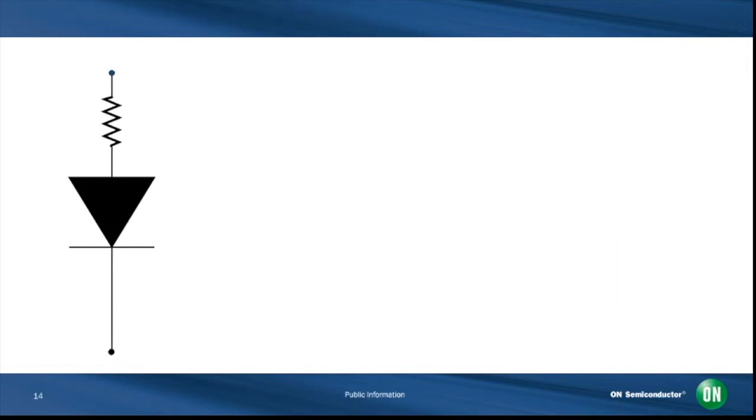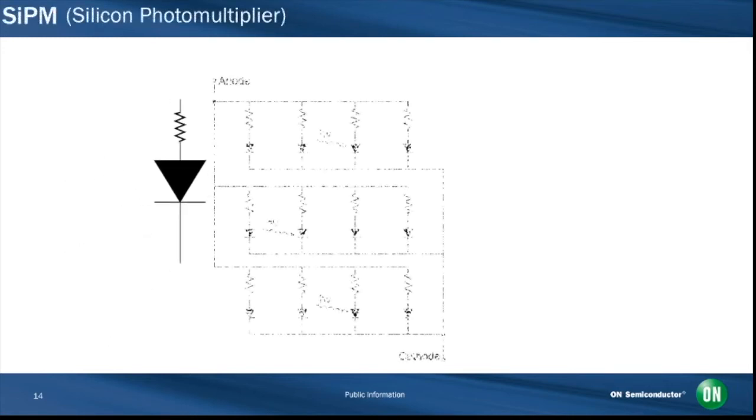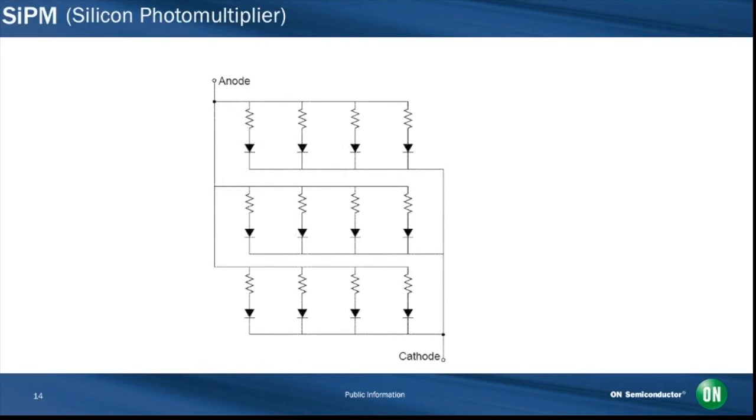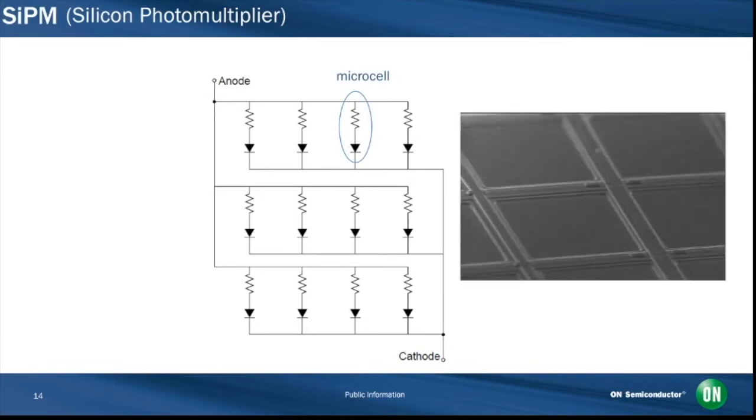To overcome this lack of proportional information, the silicon photomultiplier integrates a dense array of small independent SPAD sensors, each with its own integrated quench resistor. Each independently operating unit of SPAD and quench resistor within the SIPM is referred to as a microcell. Here we see a close-up image of a microcell from a SensL SIPM.